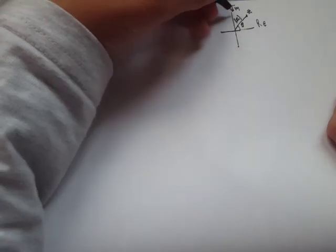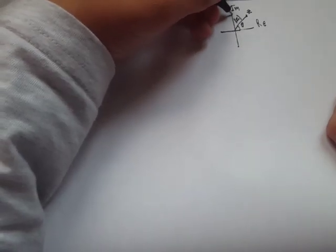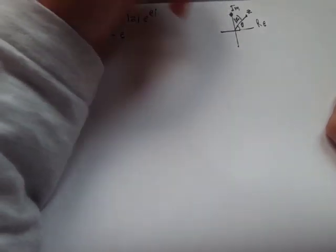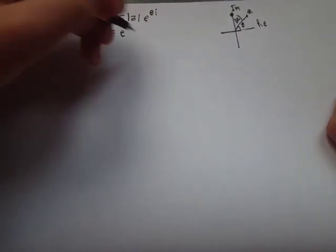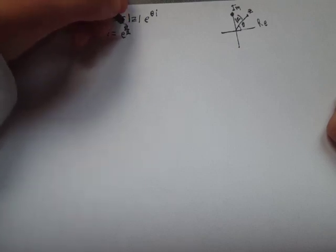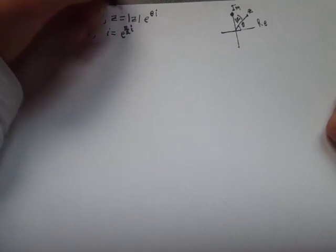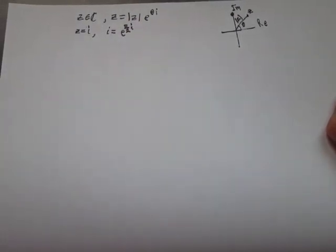Since i is right here, the angle is 90 degrees or π over 2 in radians, then times i.